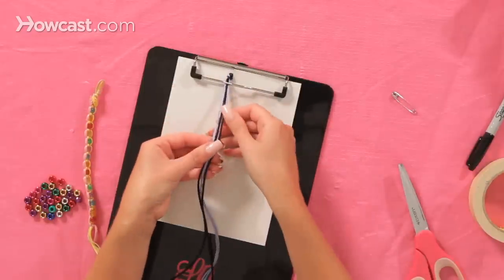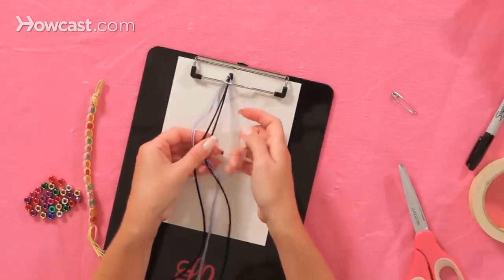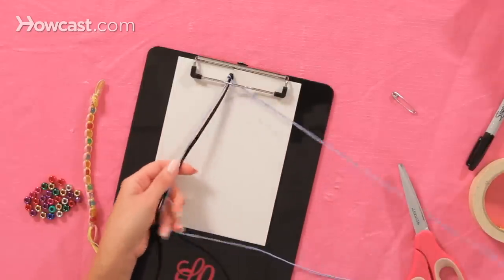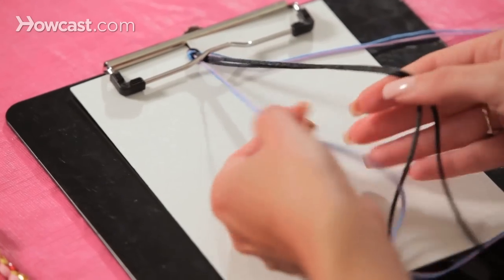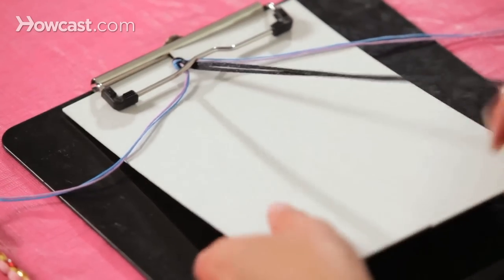Now separate the strings. Put the embroidery floss on one side, and you're going to put your rat tail cord in the middle.